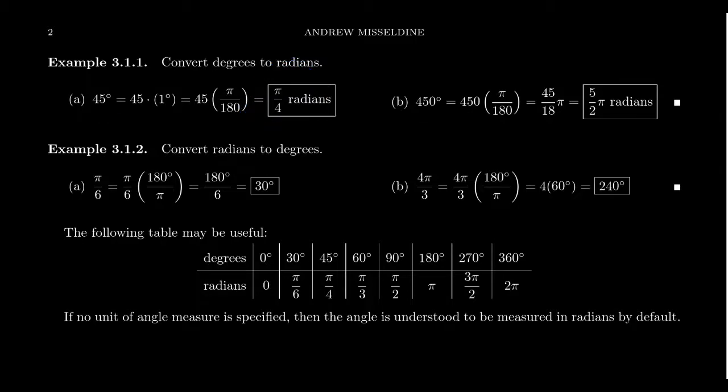Similarly, if we take 450 degrees, this is just going to be 450 times 1 degree. 1 degree is π over 180 radians. And so then we have this fraction, 450 over 180. You can divide both sides—both are divisible by 10. You get 45 over 18. They're still divisible by 9, so you can simplify the fraction to be 5π over 2 radians. This shows us how to convert from degrees to radians.